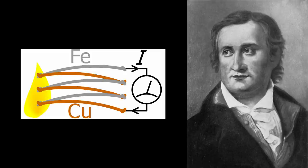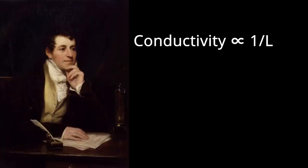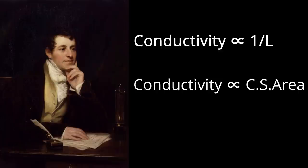Cavendish had investigated the power of metals to conduct electrostatic discharges. Davy took this further by examining the conducting voltaic currents. He discovered that the conducting power of a wire formed of any metal is inversely proportional to its length and directly proportional to its cross sectional area but independent of the shape of the cross section.